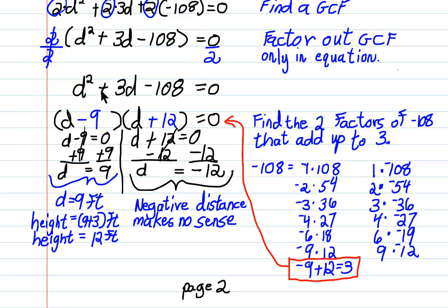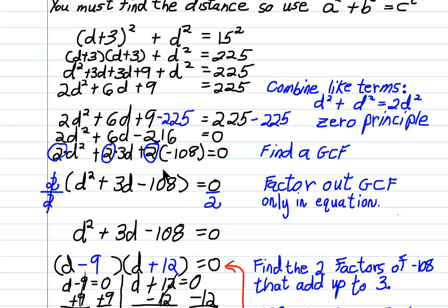Now I set each factor equal to 0. D minus 9 equals 0. D plus 12 equals 0. And then I solve each of these little equations. And I come up with the solutions, which are d equals 9 and d equals negative 12. Solutions to d squared plus 3d minus 108 equals 0.